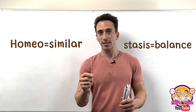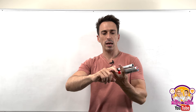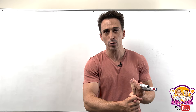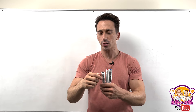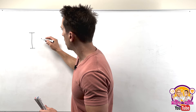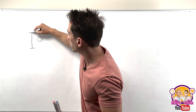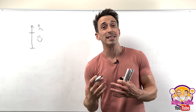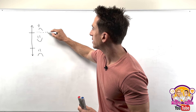Homeostasis means 'similar balance.' Pick any function of the body — it could be blood pressure, blood glucose management, pH balance, carbon dioxide levels, or temperature regulation. Pick any physiological function, and you'll find that they all have a happy, healthy range that they like to work within. There's always upper bounds and lower bounds, and it needs to stay within this range in order for you to be happy and healthy. If it goes too high, you get sick, and likewise, if it goes too low, you get sick. Homeostasis is the body trying to maintain this happy, healthy balance of its physiological range.